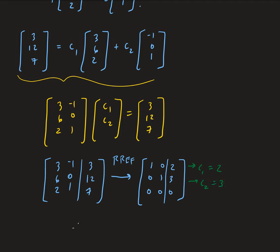So therefore, we showed that we have that X in terms of the basis vectors is equal to [2, 3].